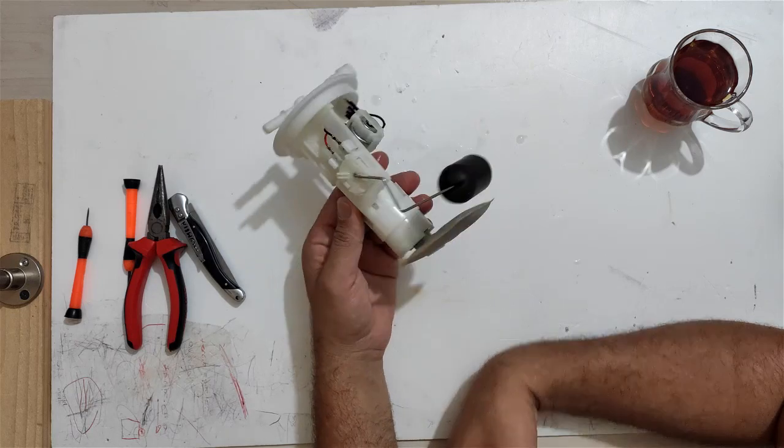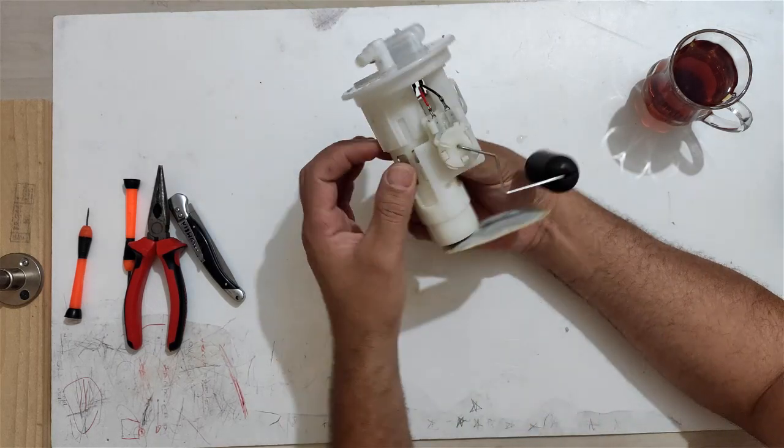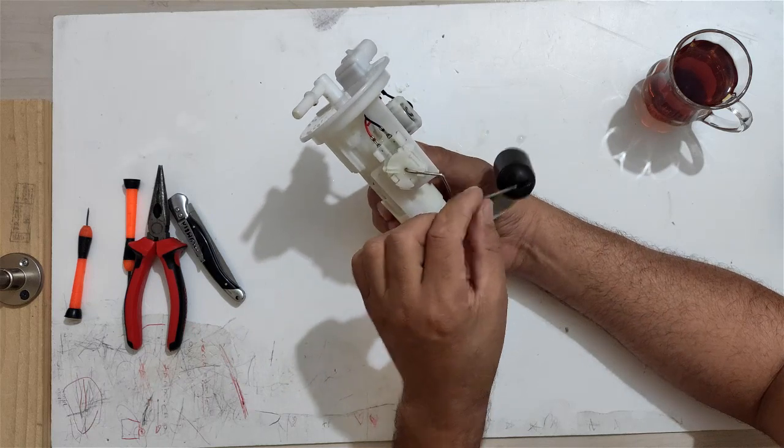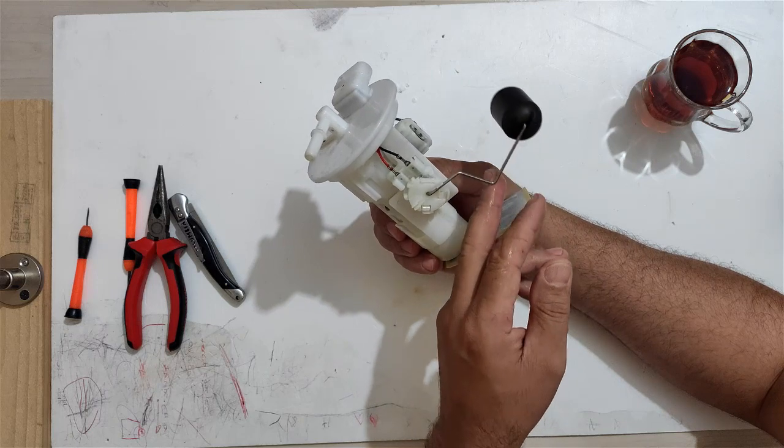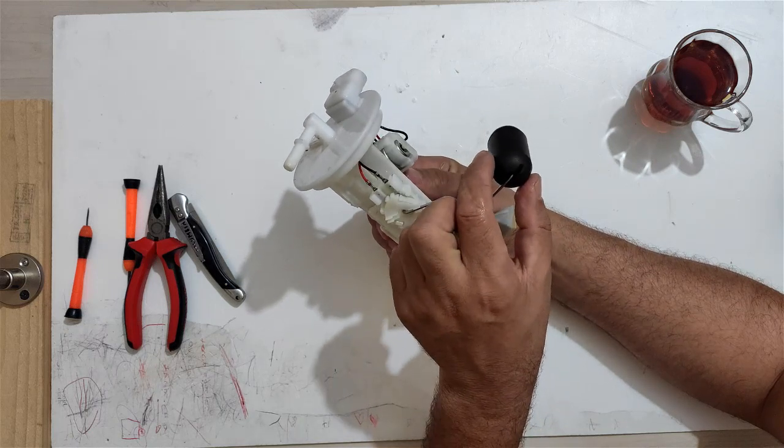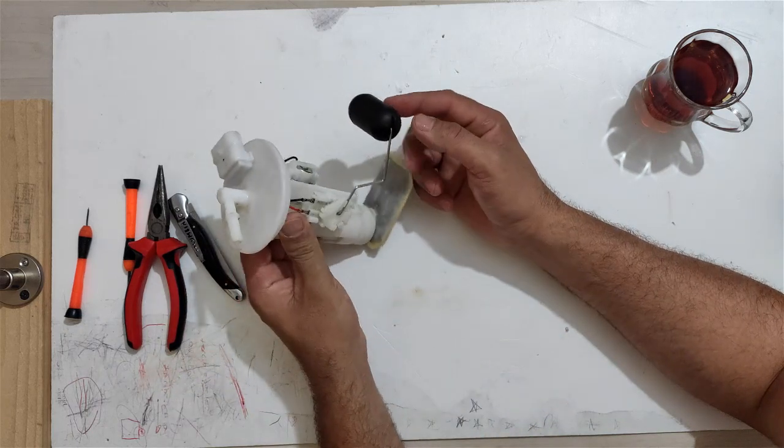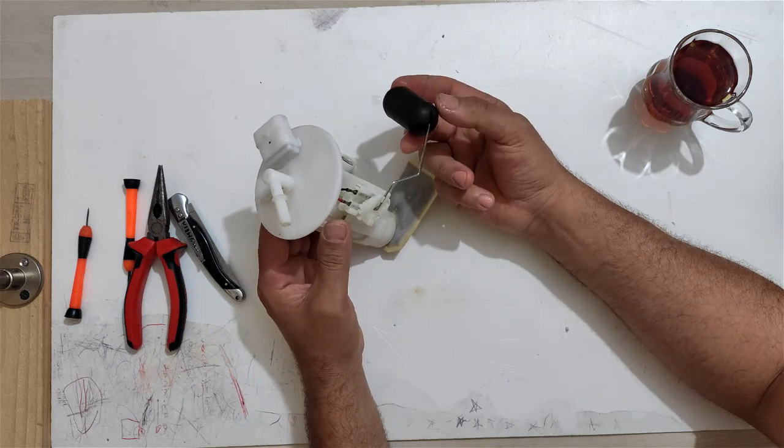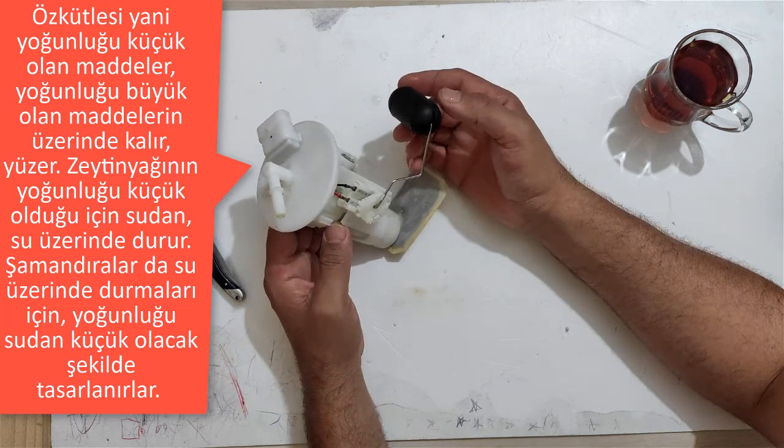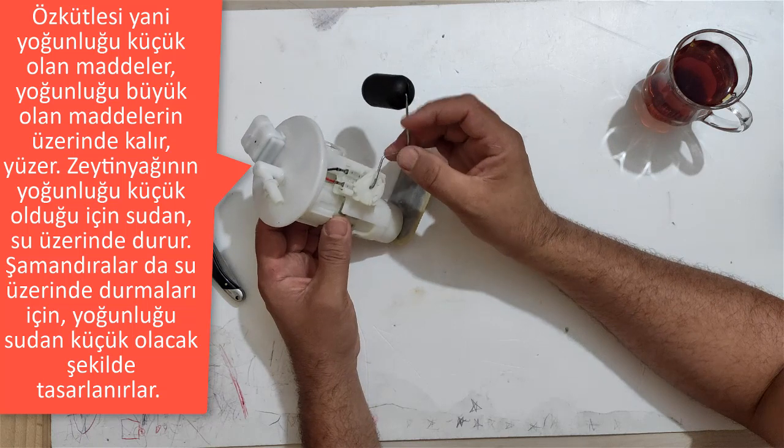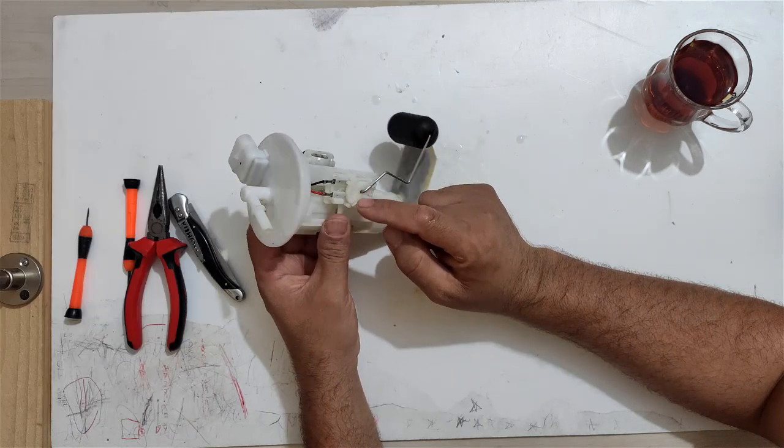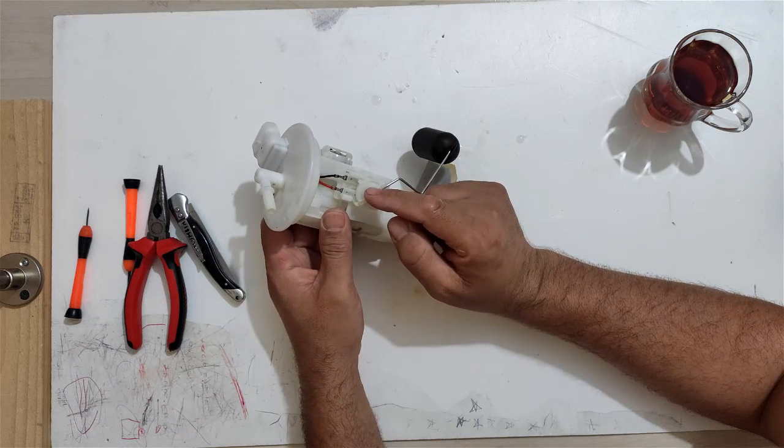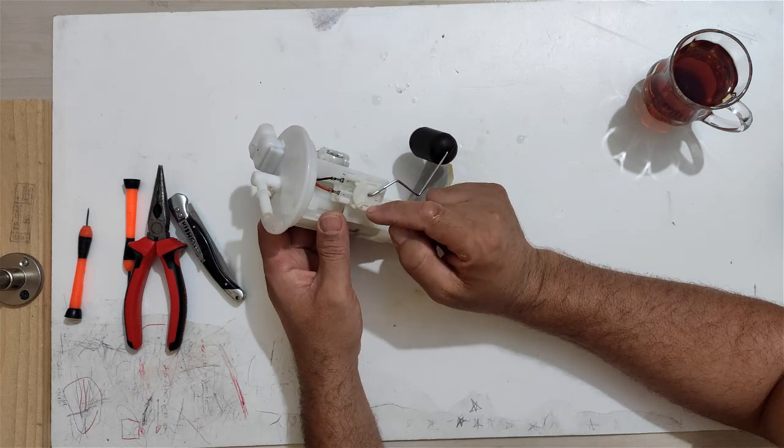Gerçekten de çevirdiğimizde bunu gözlemleyebiliyoruz. Şurada bir tane arkadaşlar şamandıra var. Şamandıra nerelerde kullanılır? Sıvı yüksekliğini belirlemede değil mi? Dolayısıyla burada bir şamandıra var. Yoğunluğu, öz kütlesi benzinden daha düşük olan bir tüpümüz var burada. İçi boş plastik. Burada bir tane onun kolu var. Kolun bağlı olduğu bir potansiyometre gibi, ayarlı direnç gibi karakter gösteren bir parçamız var.